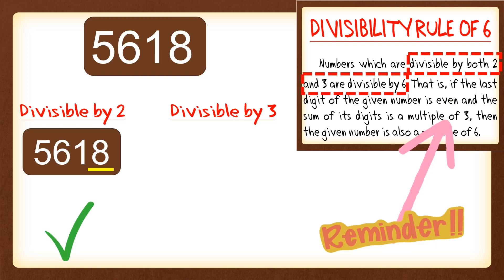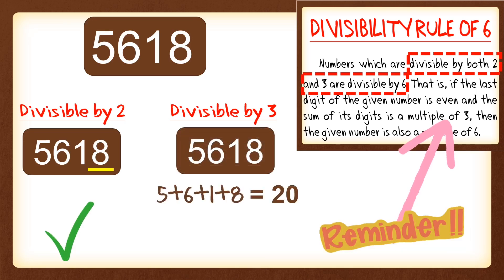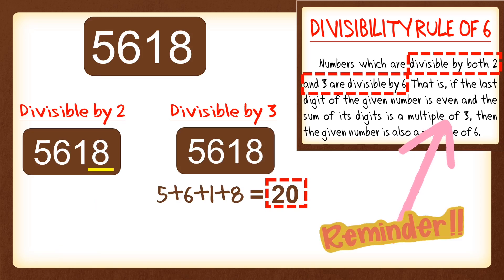Let's determine if 5,618 is also divisible by 3. To apply the divisibility rule for 3, we get the sum of its digits, and if it is a multiple of 3, then it is divisible by 3. Adding the digits: 5 plus 6 plus 1 plus 8 equals 20. Now we determine if 20 is a multiple of 3. Since 20 is not a multiple of 3, that means 5,618 is not divisible by 3.